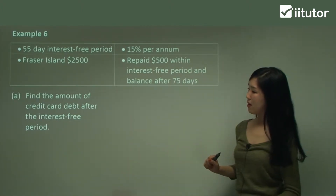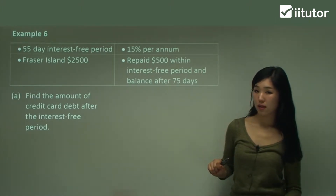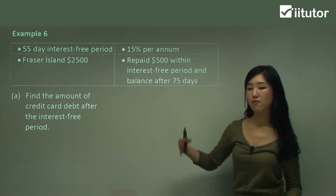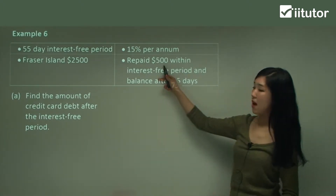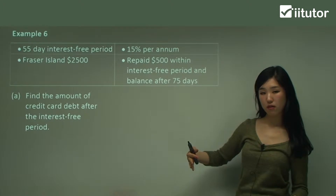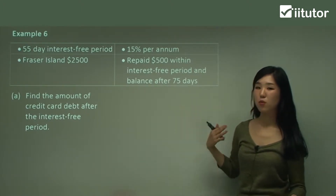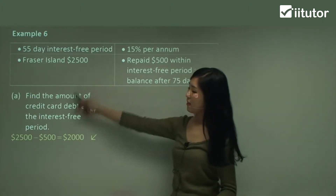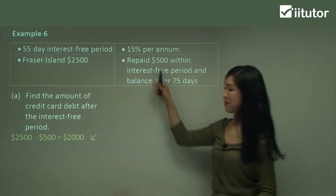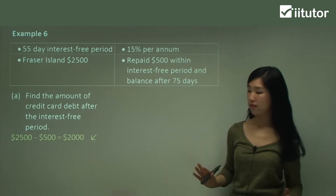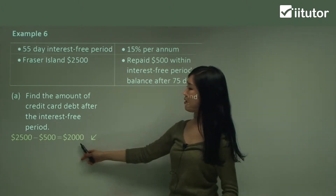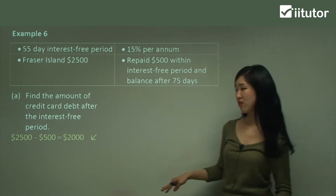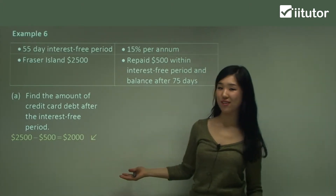Part A says: find the amount of credit card debt after the interest-free period. So how much is her debt after the 55 days? Well, it says she repaid $500 within the interest-free period. So it's asking what's the balance owing — it's going to be the price of the Fraser Island holiday minus the amount she's already paid within that period, which doesn't charge interest. So $2,000 is her credit card debt that's left for her to pay. Unfortunately, on this amount she will be charged interest.